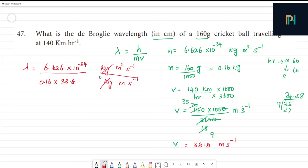So, kg cancels, meter cancels, second inverse cancels.